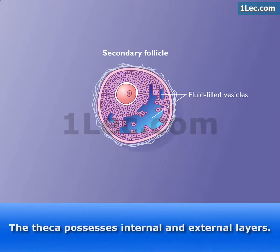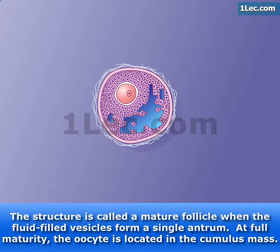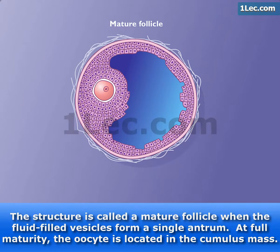The theca possesses internal and external layers. The structure is called a mature follicle when the fluid-filled vesicles form a single antrum. At full maturity, the oocyte is located in the cumulus mass.